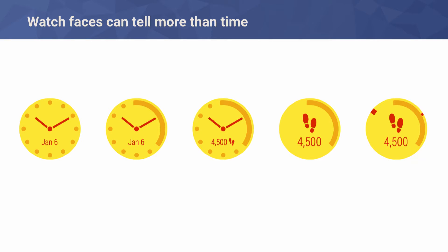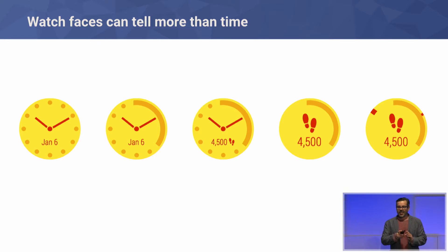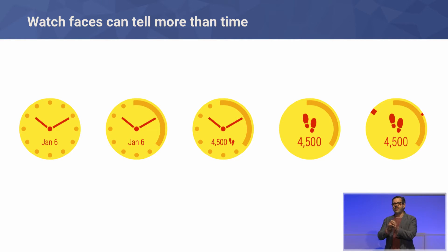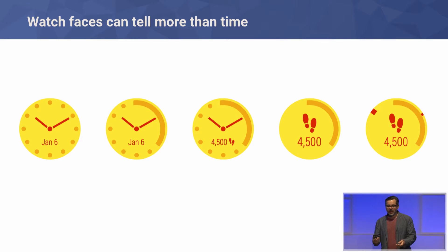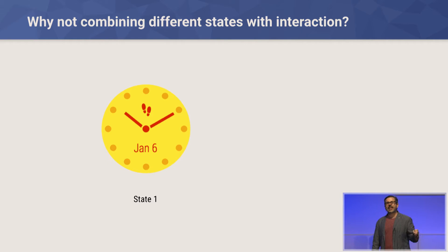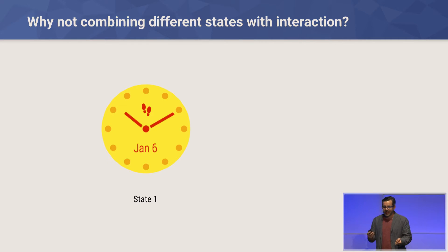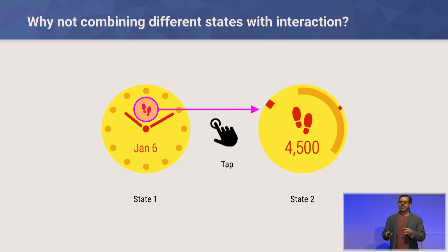Going back to watch faces — looking at this continuum, you have to choose a layout. Why do you have to choose just one fixed way of showing the watch face? Perhaps you can combine different things. That's why we came up with interactive watch faces. A watch face can be your classic design with a hint of data — what we call complications — something that sits on top of a watch face that can open another activity or do something else. You tap it and get another state, combining two states into one. You can add more interactive tap targets, opening other activities. It's a good way to have more density without cluttering the UI.